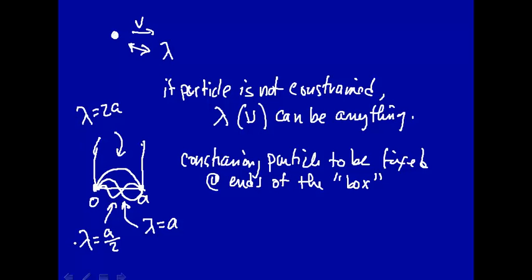The key point is that because you put constraints on this wave, wavelength is now, can only be certain values. In other words, wavelength is quantized.